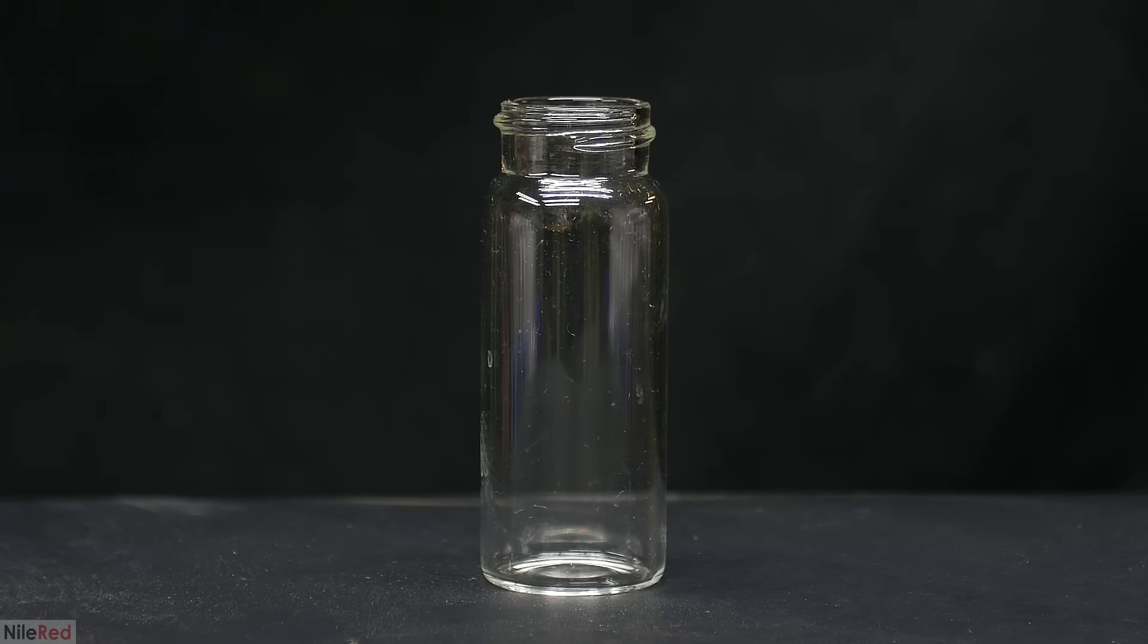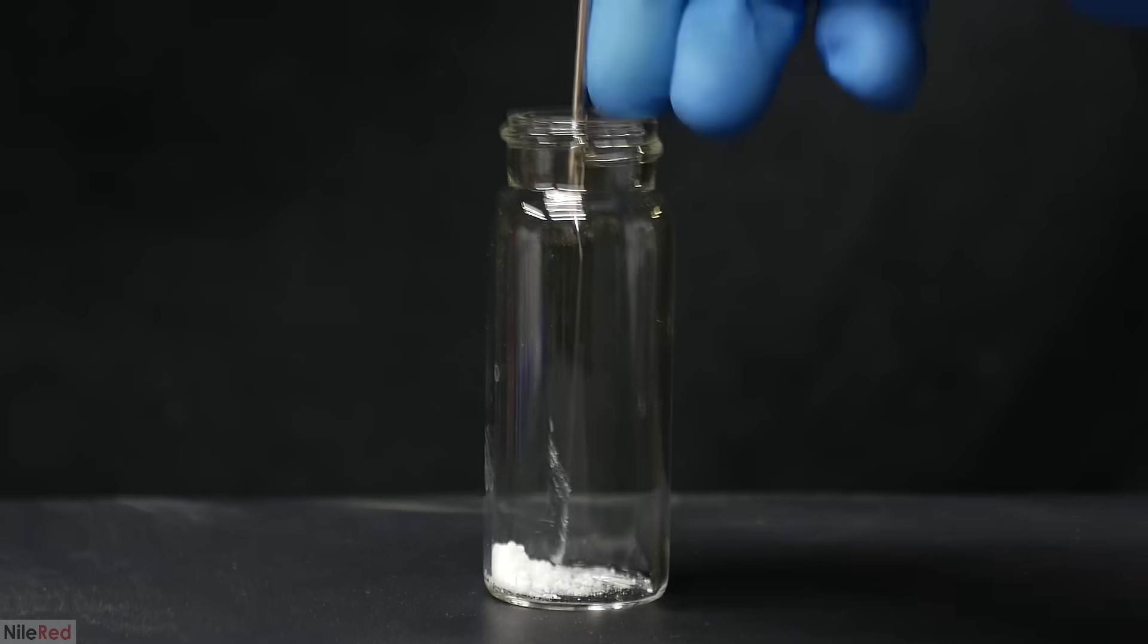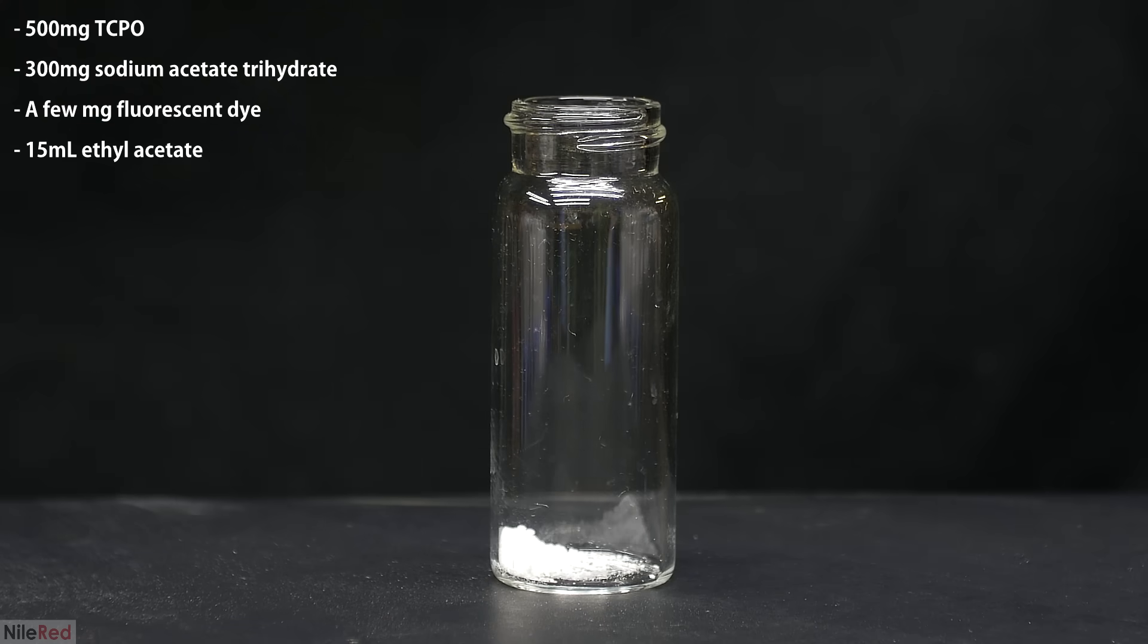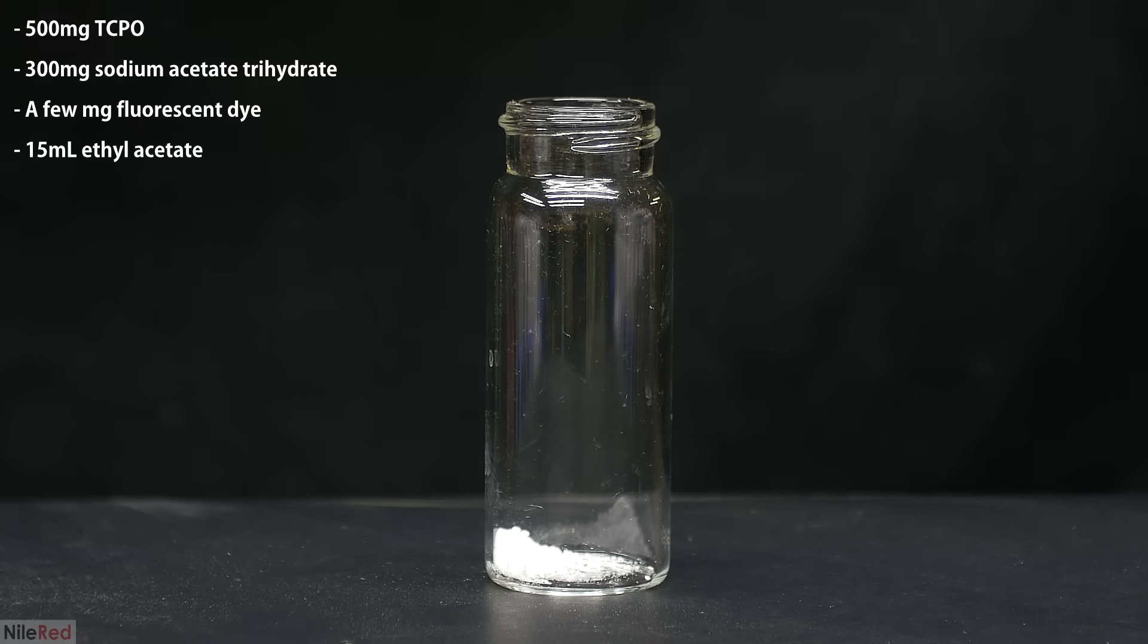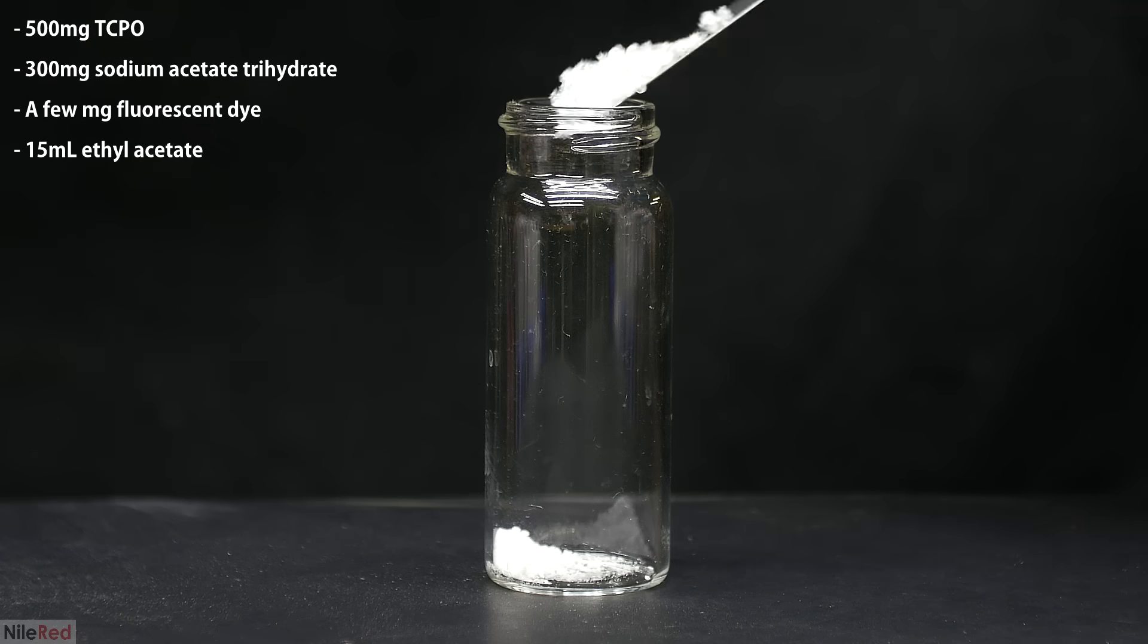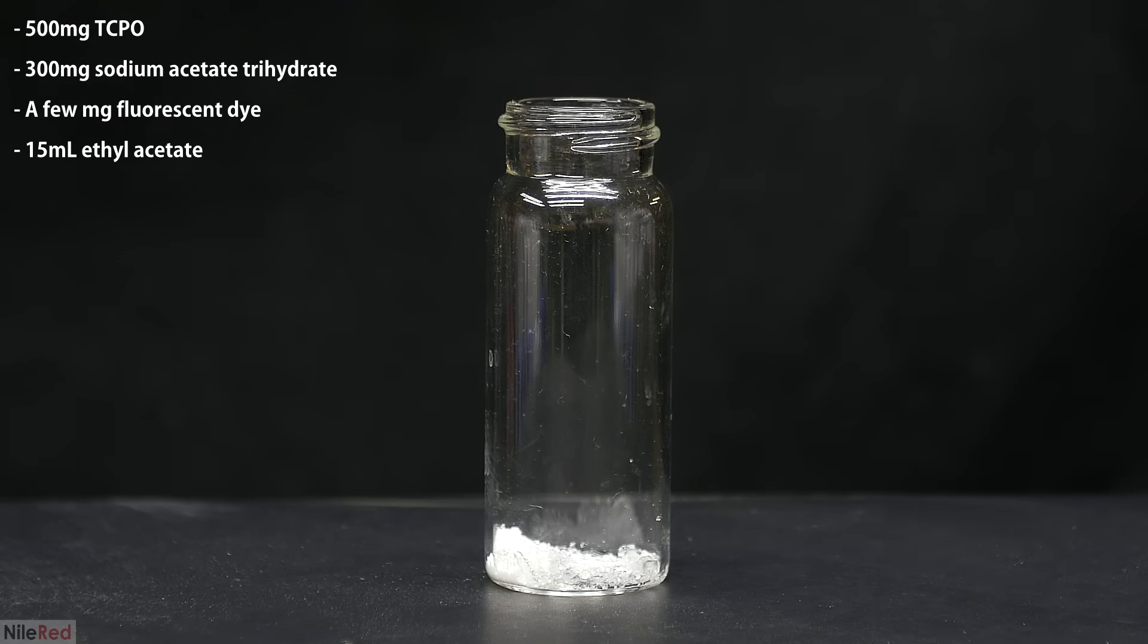Anyway, now it's time to test out the TCPO, and I'll be using pretty much the same recipe that NerdRage used. So in terms of the quantities, I'll be using half a gram of the TCPO, 300 milligrams of sodium acetate trihydrate, a few milligrams of the fluorescent dye, and about 15 milliliters of ethyl acetate.